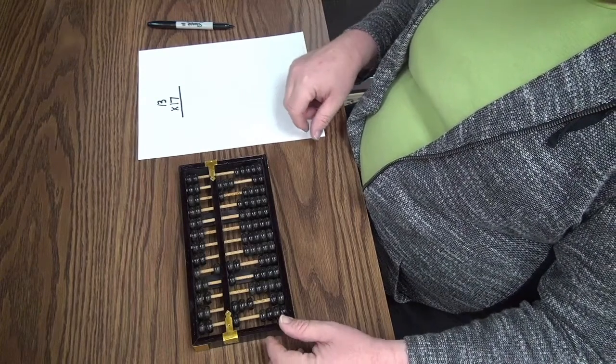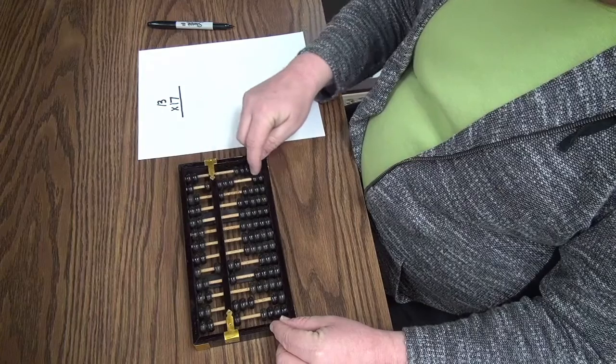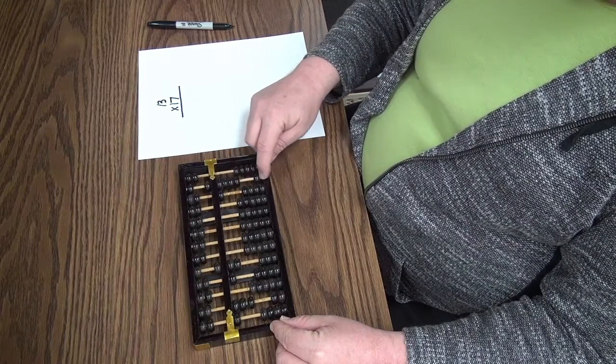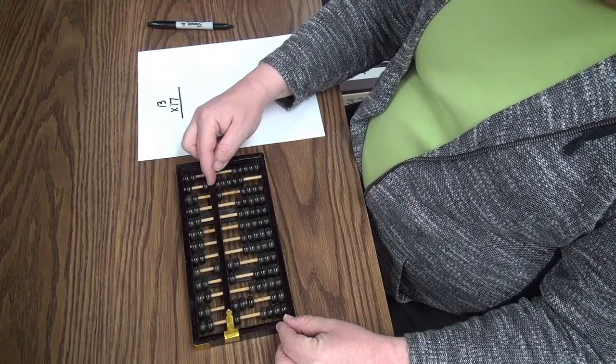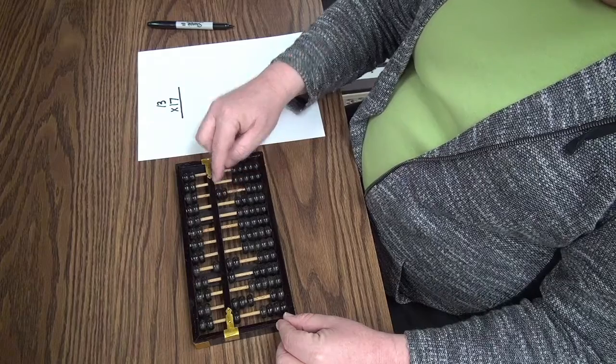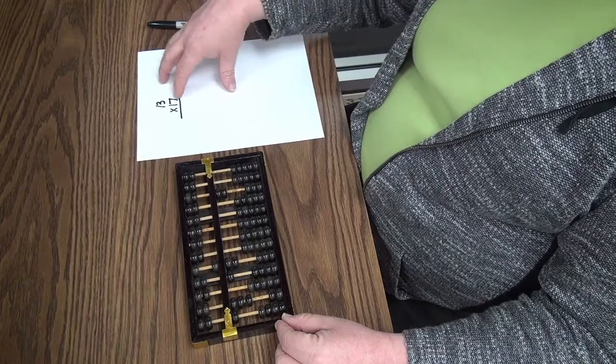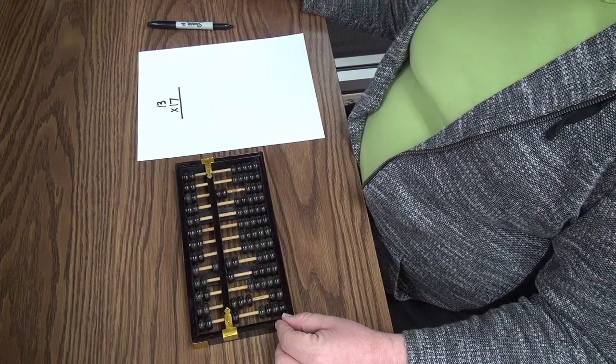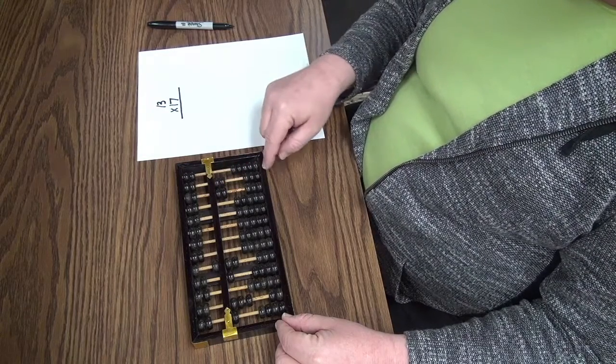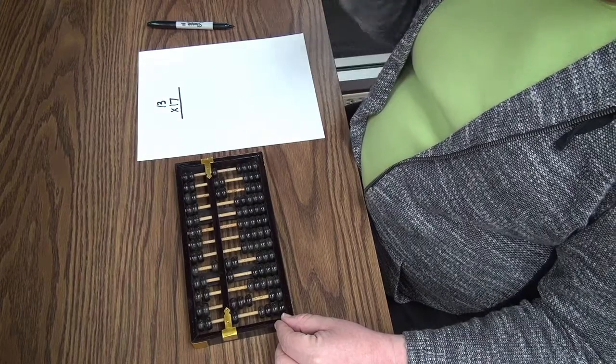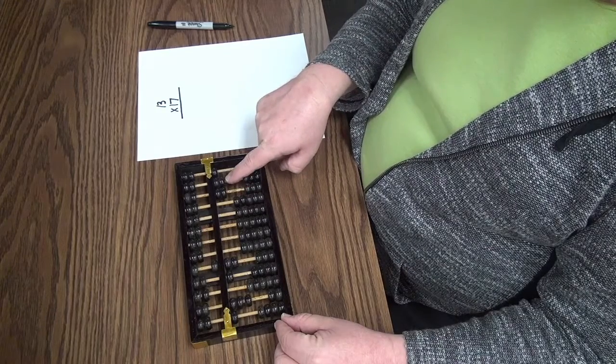Now I want to take the 7 times 10. So 7 times 10 is 70. So I'm going to add a 5 for 50, 60, 70. That gives me the 70. Now, because I have 10 here in the middle, I'm going to clear this and add a 100 bead. Now that leaves 7 times 3 remaining and 7 times 3 is 21. So I'm going to put 2 beads up in the 10's column and 1 bead up in the single column. So my answer is 221.